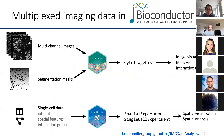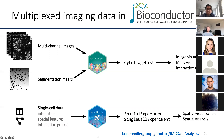Steinbock produces standardized output files, which allowed me to write a reader function that puts all data together in a SpatialExperiment object. This brings me to the R or Bioconductor side. After image preprocessing, you have multi-channel images and segmentation masks in TIFF format, and single-cell measurements like intensities, shape features, and interaction graphs. We also have a more extensive R-based workflow available online that summarizes and gives guidelines to all these analysis steps.